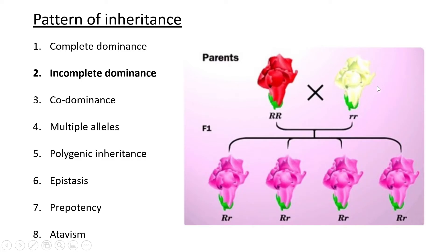We can use R and W alleles in this example. Where it's homozygous for one allele you'll have red color, homozygous for the other allele you'll have white color, and when you have heterozygous individuals the heterozygosity gives us a different color. The main thing to remember about incomplete dominance is that you have the same trait — color in this case — but a completely new phenotype comes out. Not one of the parents was pink; the pink arises because both different alleles are present within these individuals.